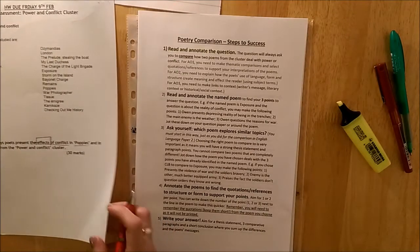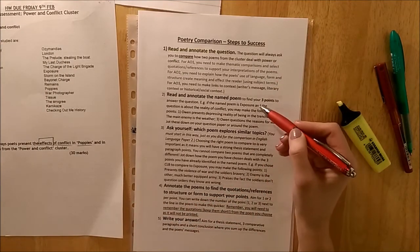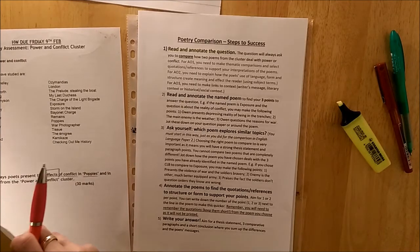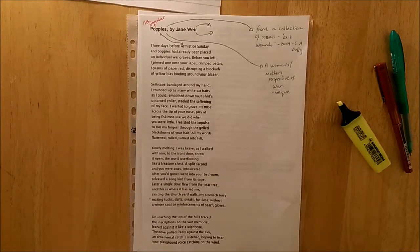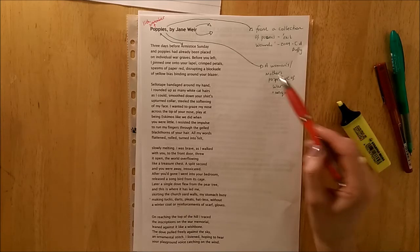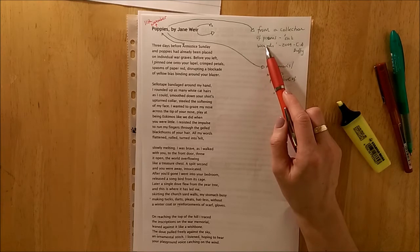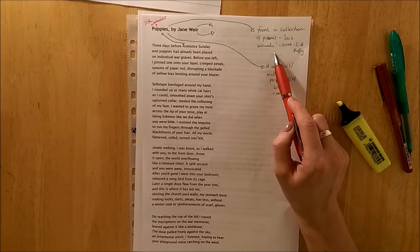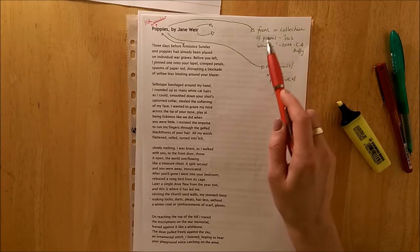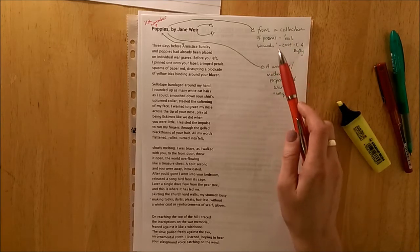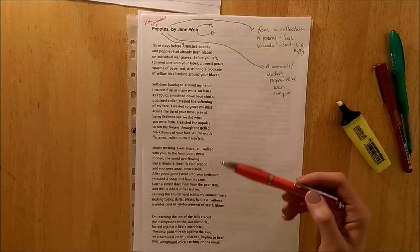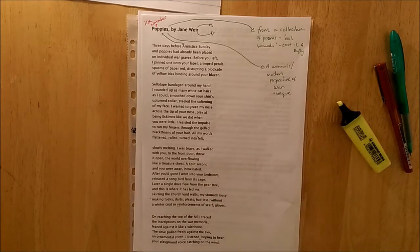The second step that we do once we've read and annotated our question is to read and annotate the named poem on the page. We're looking for three points and at least three, maybe four, five, six, weighty quotations. As you can see, I have already begun by annotating this poem with some contextual information. Poppies by Jane Weir is from a collection of poems called Exit Wounds that were published in 2009 by Carol Ann Duffy. You know her from our anthology. 2009 is a post-Iraq, post-Afghanistan war context where lots of families were receiving news about their sons, daughters, family members, friends that had been out to war in the early 2000s.